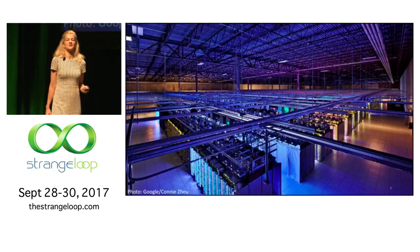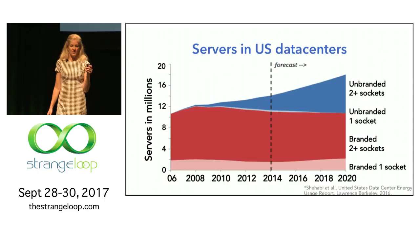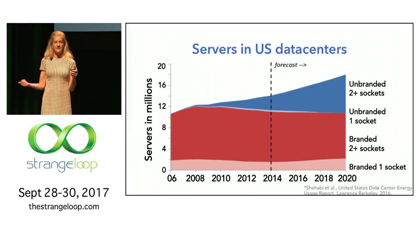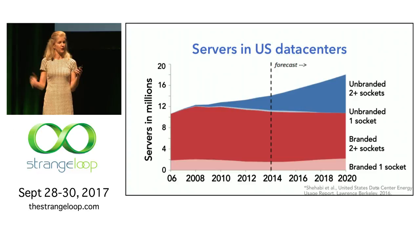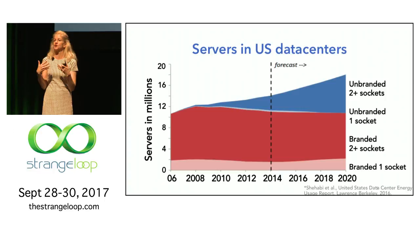Servers in big data centers with lots of networking are consuming lots of power and have lots of processors. This data comes from the Lawrence Berkeley Labs, which collects government and company data about data centers. This is a snapshot of what's in data centers in 2014 with a forecast. The bottom is branded one-socket — one NUMA socket, everything shared. The red is branded two-plus sockets, meaning most servers now have at least two NUMA domains with separate memory and processors, but still a strong interconnect using the same power.